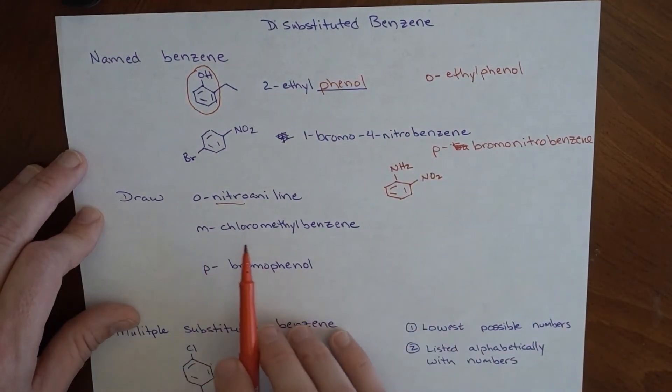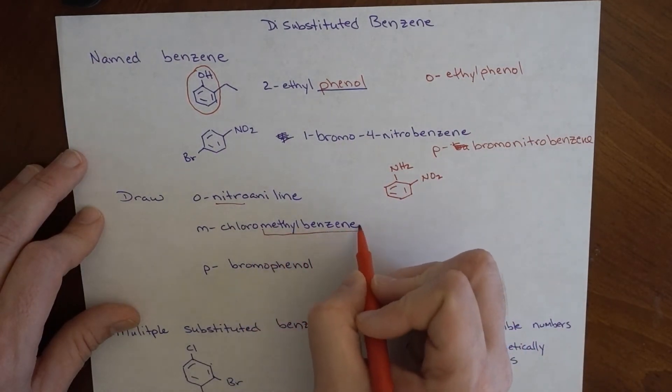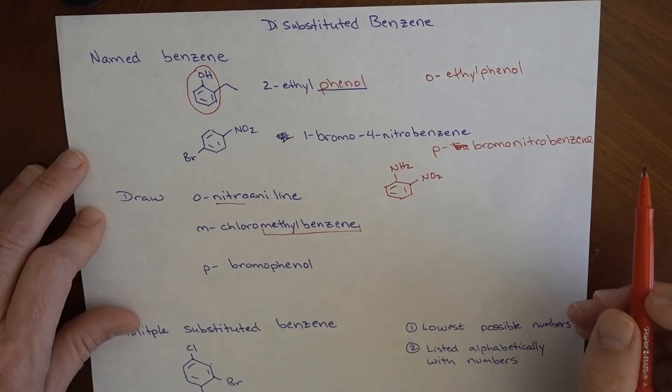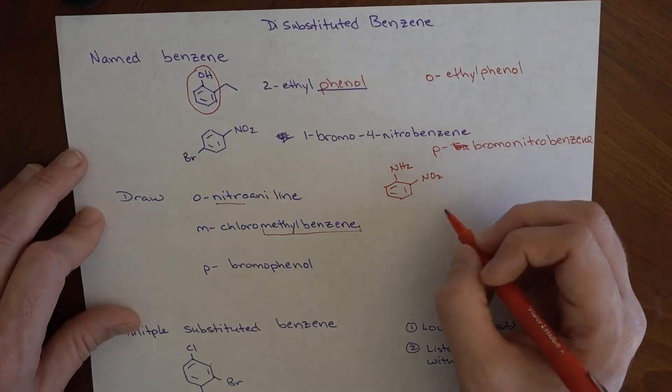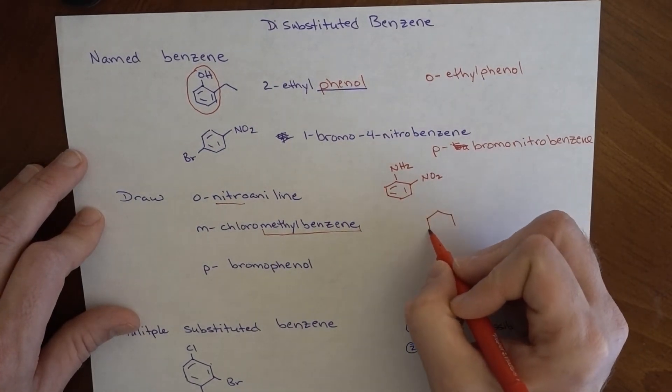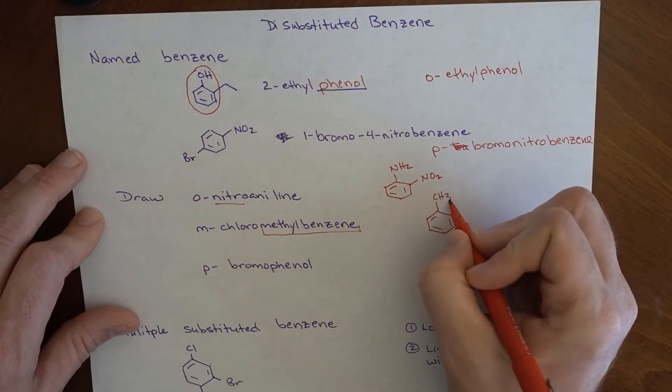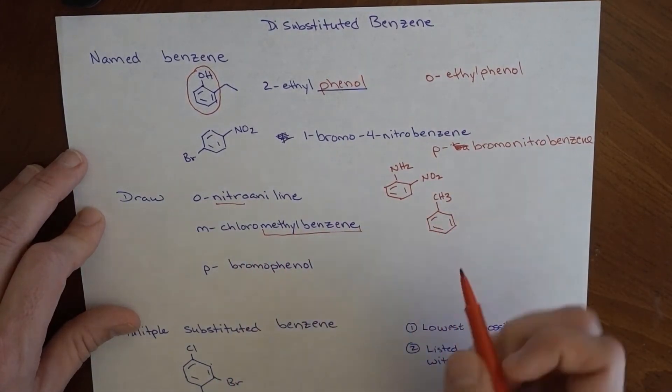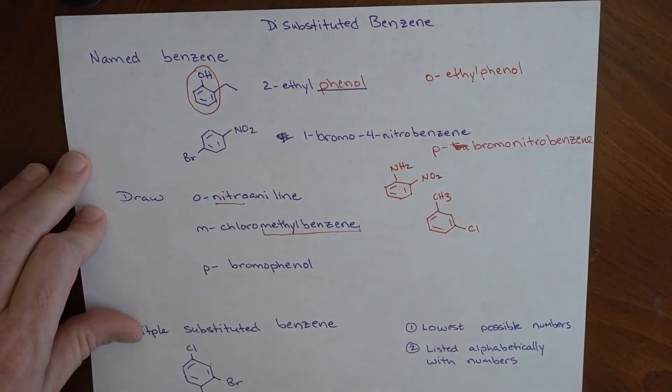How would we draw meta-chloro-methylbenzene? Methylbenzene, you might recognize as toluene. However, in this sort of situation, it is not considered toluene. It's labeled as methylbenzene. So methylbenzene is this, and then meta-to-that methyl is a chloro. That is meta-chloro-methylbenzene.